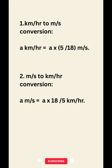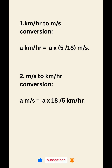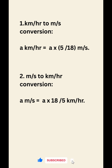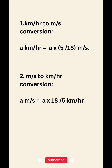Let's take a quick speed conversion trick. To convert kilometer per hour to meter per second, take the speed in kilometer per hour, multiply by 5, then divide by 18. To convert meter per second to kilometer per hour, take the speed in meter per second, multiply by 18, then divide by 5.